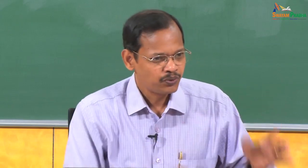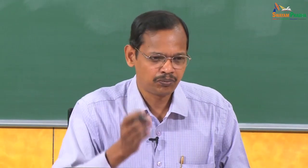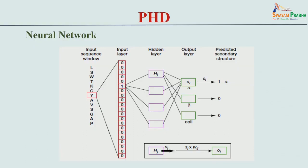From these probabilities you identify the most likely state - helix, strand, or coil. Here is an example: the input layer has 21 values - 20 for the 20 different amino acids and one for padding or insertion-deletions. For the central residue Y, you put 1 at Y's position and 0 for all others. Then there are hidden layers where training occurs and different weights are assigned between nodes.